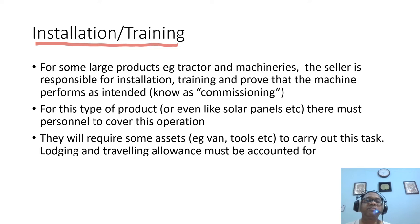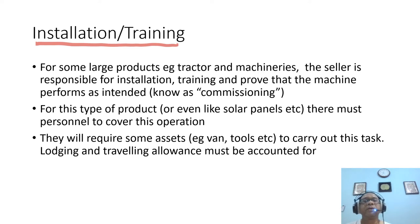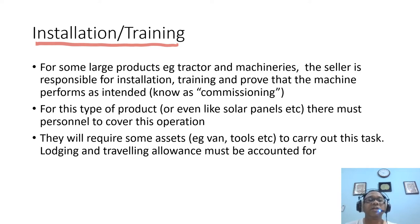For large products such as tractors, machinery, or solar panels, the seller is responsible for installation. You must provide training and prove that the machine performs as intended — this is called commissioning. Training can take a week to ensure the customer knows how to operate the machine. The team covering installation and training needs assets such as a van and tools. You also have to pay for lodging and travel allowance. All of this must be accounted for in your cash flow.